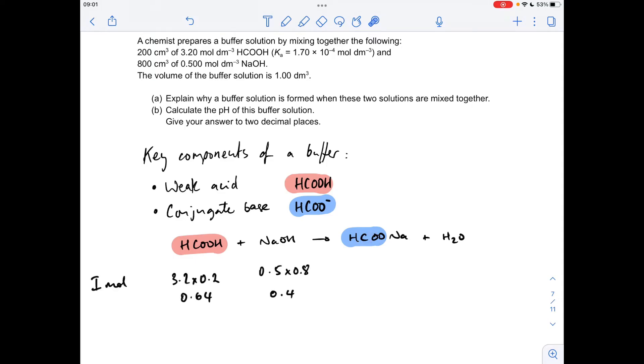So the first thing we're doing is calculating the initial moles of the acid and the sodium hydroxide. So concentration times volume, remember the volume needs to be in decimeters cubed. So we've got this many moles of acid and this many moles of sodium hydroxide.